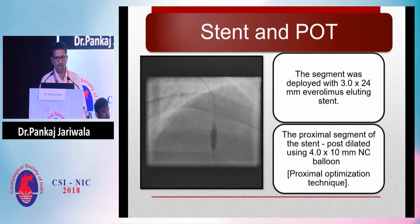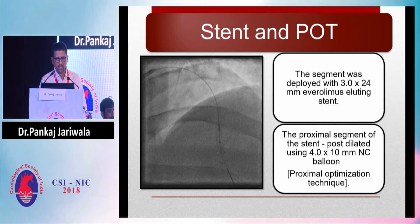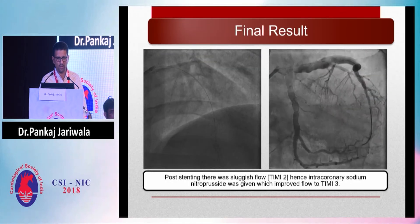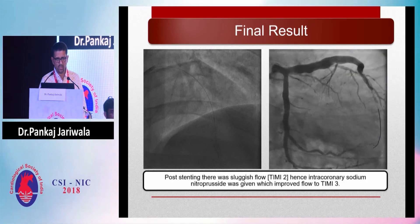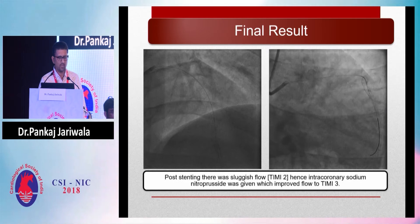I then deployed a 3 × 24 mm drug-eluting stent at the short segment lesion. As the proximal part of the stent was a little larger, I did proximal optimization technique using a 4 × 10 mm non-compliant balloon. The final result showed some sluggish flow, which improved further after giving intra-coronary sodium nitroprusside, establishing TIMI-3 flow.